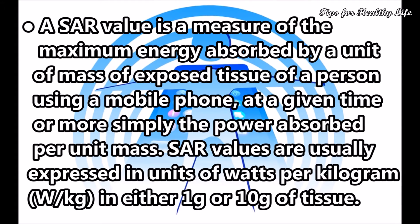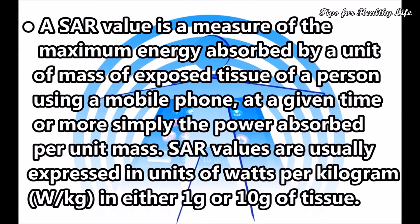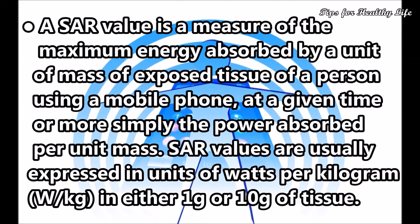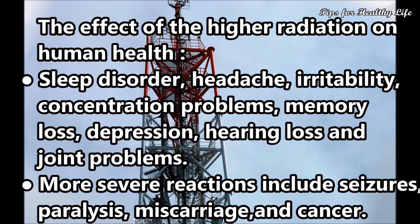SAR values are usually expressed in units of watts per kilogram (W/kg) in either 1 gram or 10 grams of tissue. SAR limits in various countries: European Union — 2 W/kg in 1 gram of tissue; USA — 1.6 W/kg in 1 gram of tissue; Australia — 1.6 W/kg in 1 gram of tissue; India — 1.6 W/kg in 1 gram of tissue.